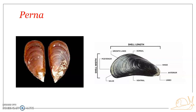Regarding other features of Perna, the body is soft and divisible into a foot and visceral mass. The head is indistinct or absent. The whole body is enclosed within a bivalve shell which is calcareous in nature, and the two shell valves are equal and similar.